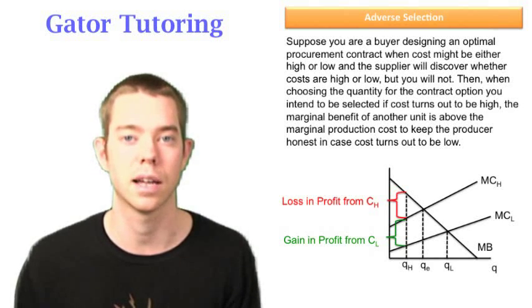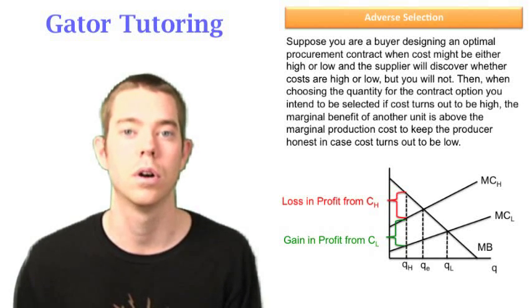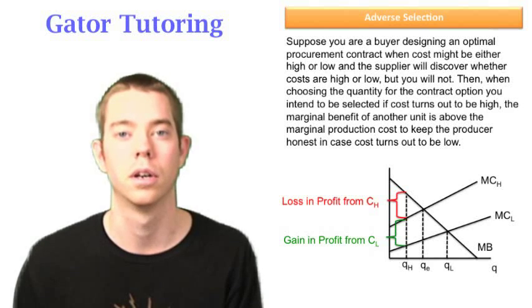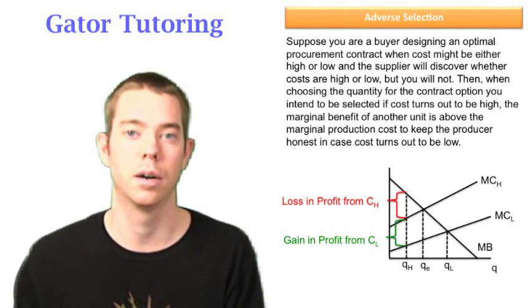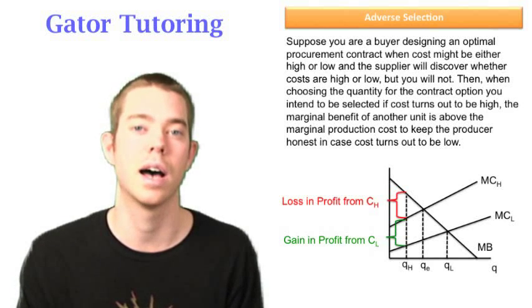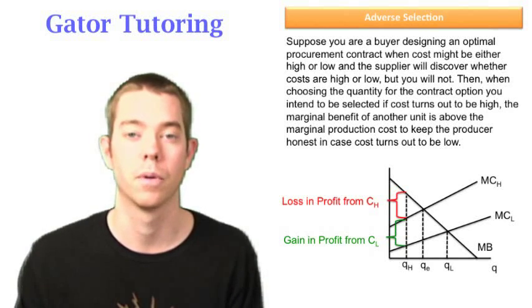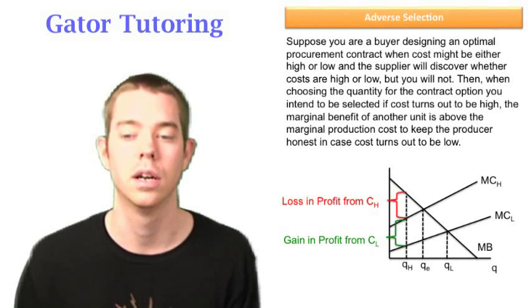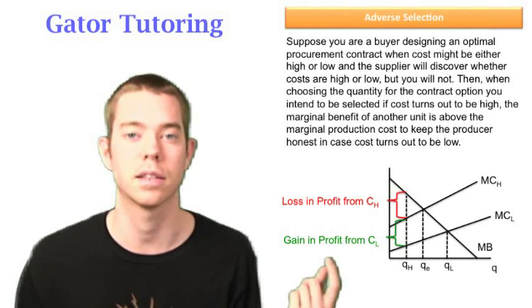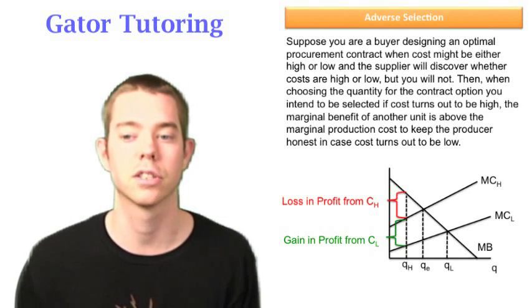We're telling him that if you go ahead and tell us costs are low, we're going to make it more worth your while, we're going to make it just as worth your while as if you lied and said costs are high when they in fact were low. So this goes back to the truth-telling constraint. Again, memorize this graph because it's going to answer a bunch of these questions like this very easily.